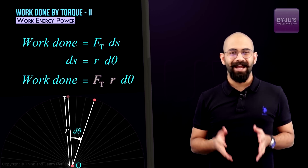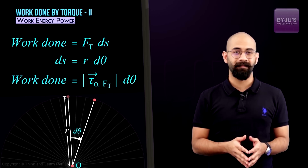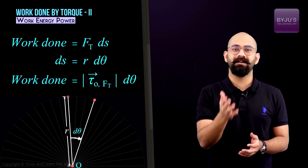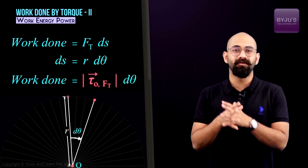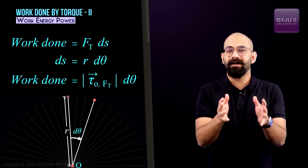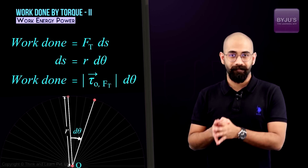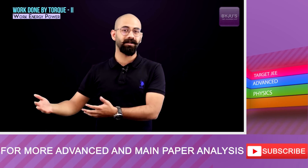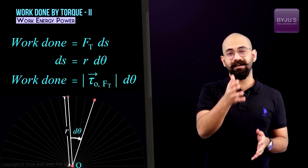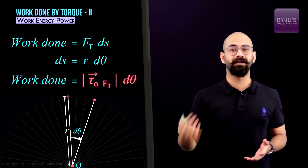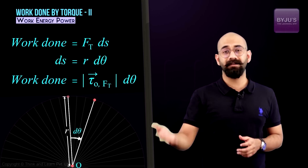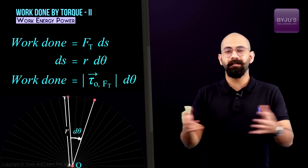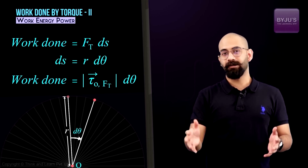Now, Ft times r is nothing but the torque produced by this force about the center. So replacing that, we get: work done = τ·dθ. This fits perfectly with our model of replacing translational formulas with rotational analogs. In translational mechanics, work = F·ds; similarly here, work done by torque = τ·dθ, because torque is the rotational analog of force and dθ is the rotational analog of displacement.